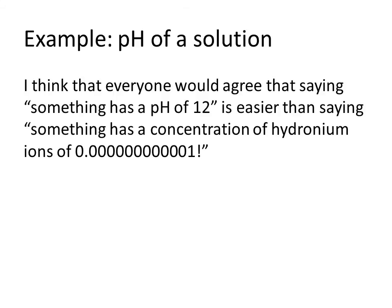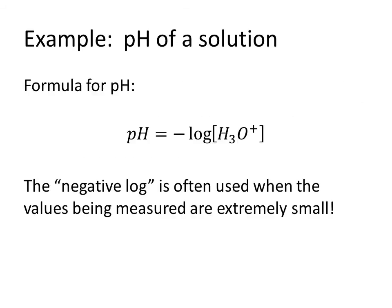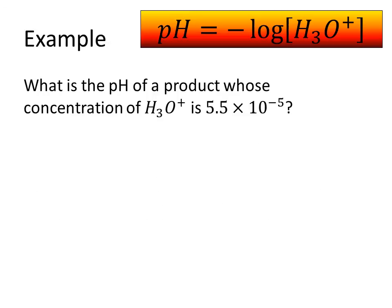It just is easier to say. The formula for the pH of a solution is: pH equals the negative log of the concentration of hydronium ions. The negative log is often used when the values being measured are extremely small. So let's look at this example: what is the pH of a product whose concentration of hydronium ions is 5.5 times 10 to the negative 5?